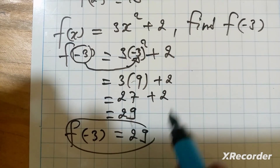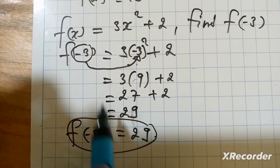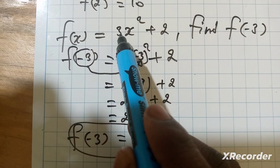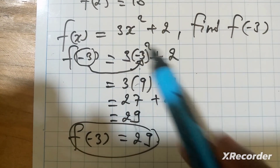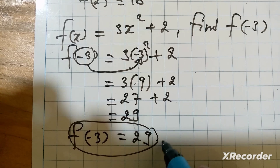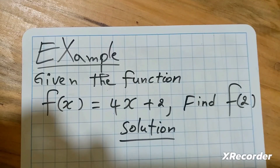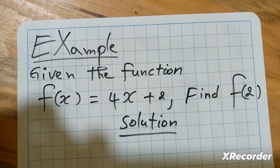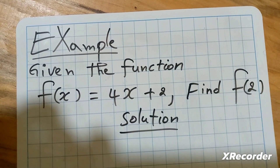This is the solution for f of x which is equal to 3x squared plus 2. Now we are done with these examples.